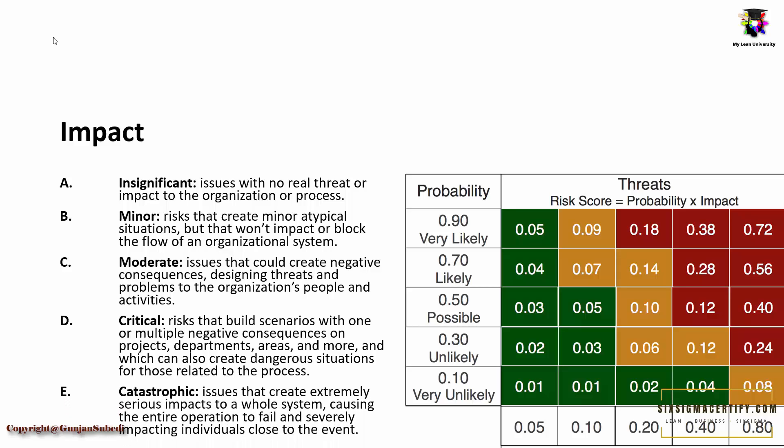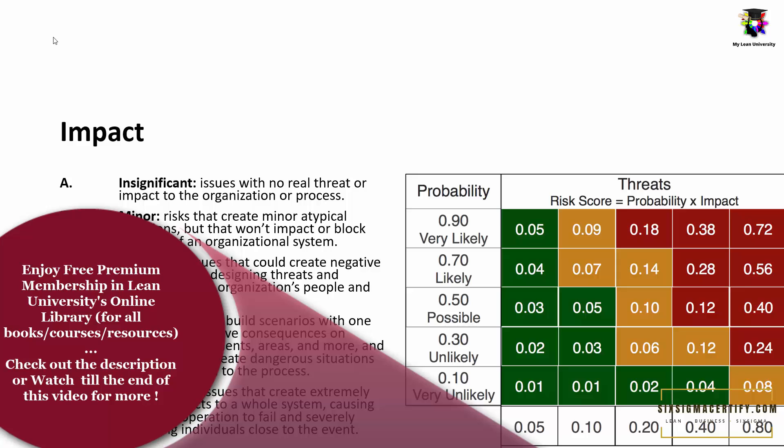Another weightage assigned for impact is catastrophic impact. When any activity in the project impacts the project in a negative way in much broader terms or affects the project at a high level, it is called catastrophic impact. Catastrophic impacts are issues that create extremely serious impacts to the whole system, causing an entire operation to fail or severely impacting individuals close to the events. It may also cause minor or major accidents and may result in the entire failure of the project.